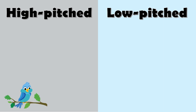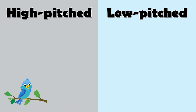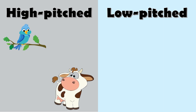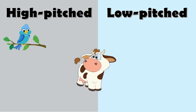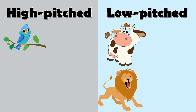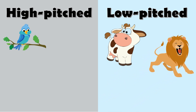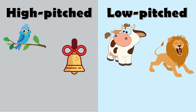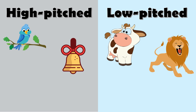First, a bird. What's your answer? High pitch sound! Next, we have a cow's moo. What's your answer? Low pitch. How about a lion's roar? Low pitch. And last, we have an adult's voice. What's your answer? Of course, low pitch.